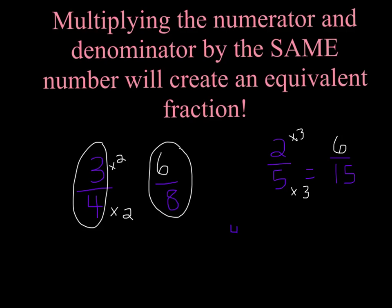Let's try one more example. What if I had four-eighths and I want to know how many sixteenths that would equal? I would say eight times two equals sixteen, and four times two equals eight. So four-eighths equals the same value as eight-sixteenths. They're equivalent fractions.